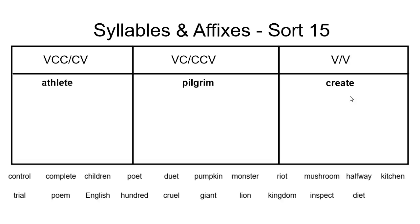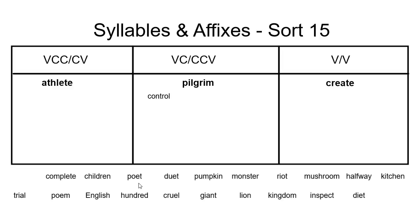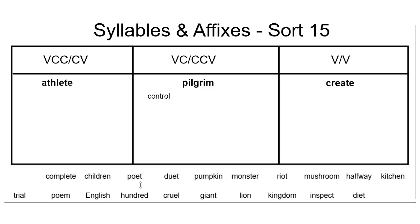Let's go ahead and find some more words that fit into each category. When I look at the word control, I notice that it breaks right in between the N and the T. When we look at what letters are on either side of the syllable juncture, we notice that it's a vowel, consonant, then the syllable juncture, then consonant, consonant, vowel. That would put the word control right underneath pilgrim. When we look at the word poet, I notice that the syllable breaks right between the O and the E. Since it breaks right between the two vowels, let's go ahead and put it underneath the word create.